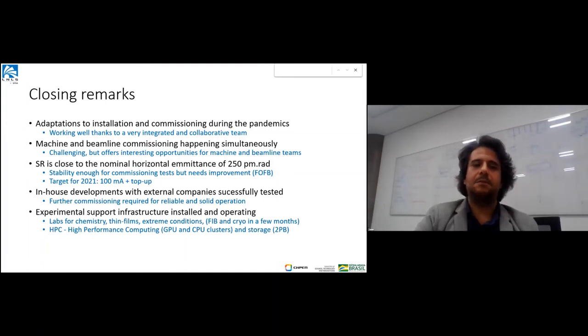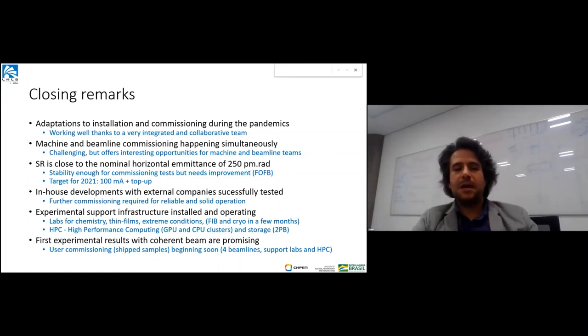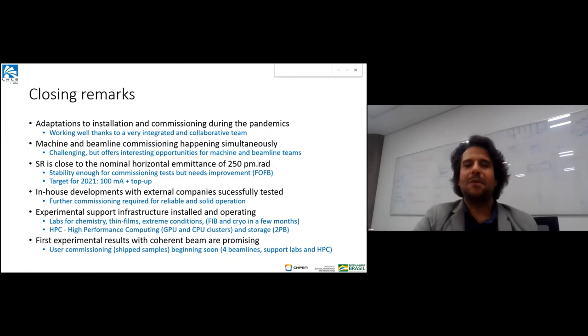We've implemented support infrastructure for different labs: chemistry, thin films, extreme conditions. The FIB and cryo preparation labs are just being installed, and high-performance computing is already operational and being used by users. We expect the first coherent diffraction imaging results are very promising. We expect to bring user commissioning with shipped samples - we're still not allowed to bring people to campus, but in the next couple of months, stay tuned, we hope to open four beamlines for user commissioning.